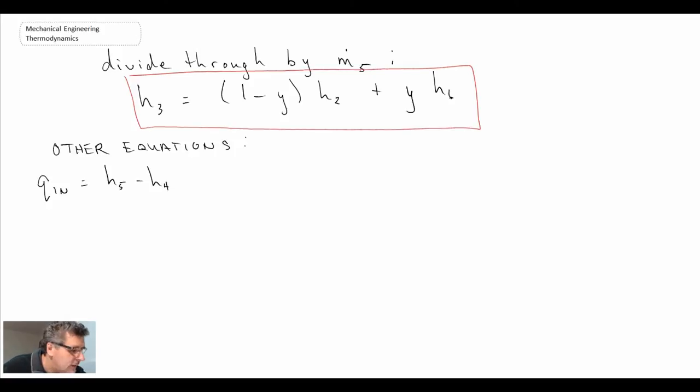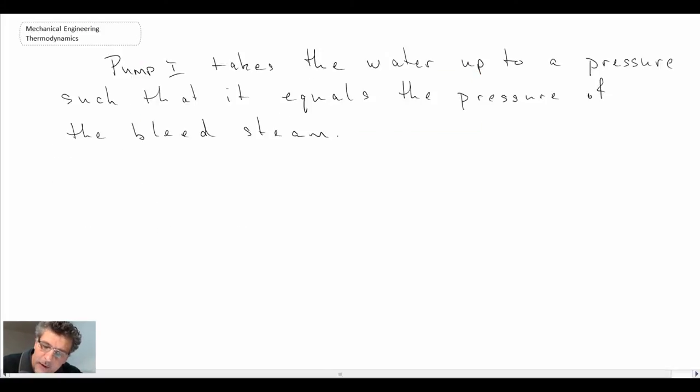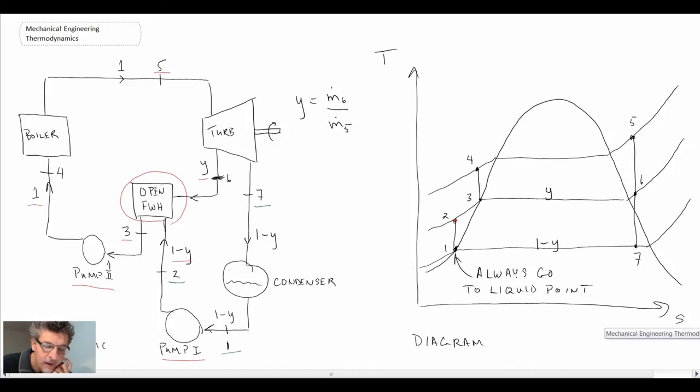So Q_in is just the change in enthalpy across the boiler. Q_out would be the fluid stream going through our condenser. So we need to take into account the mass fraction, which we're doing with the 1 minus y, times H7 minus H1. Now let's go back and take a look at our diagram here, our process schematic. So what we're doing, we're looking at the enthalpy change between state 7 and state 1.